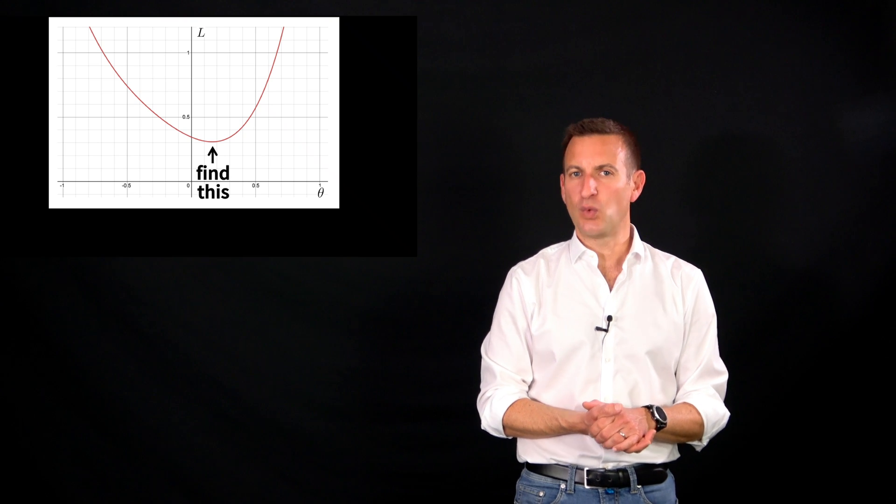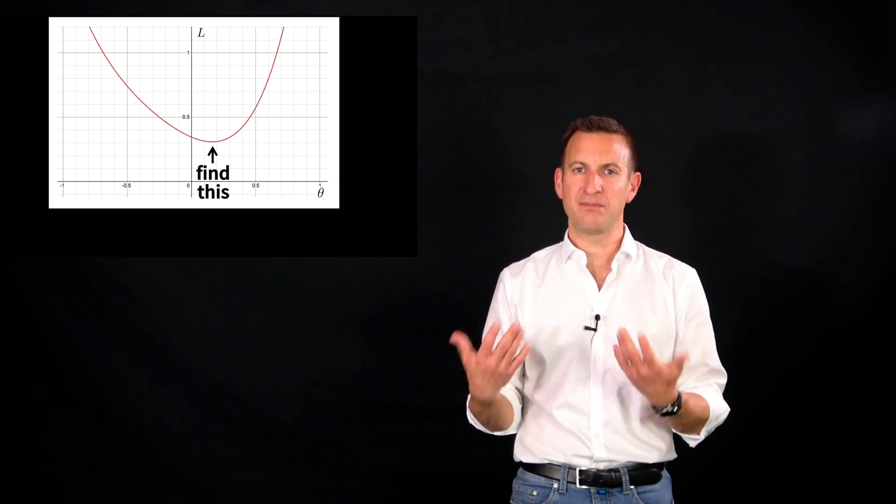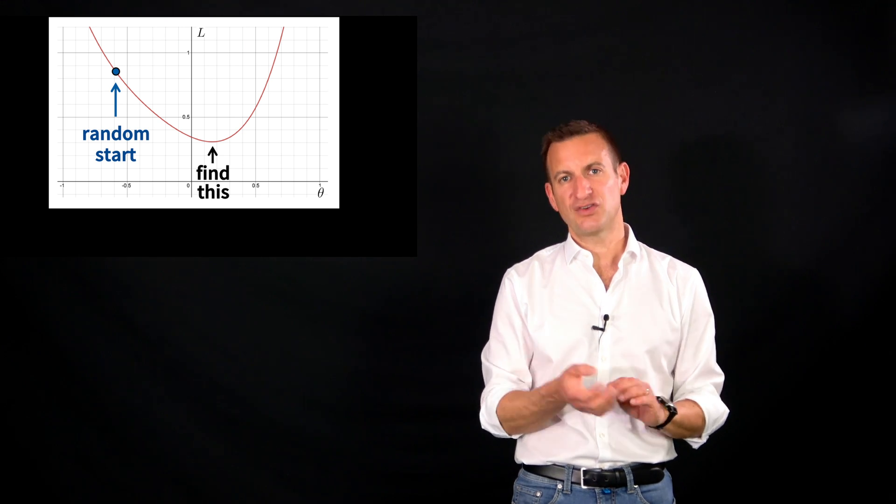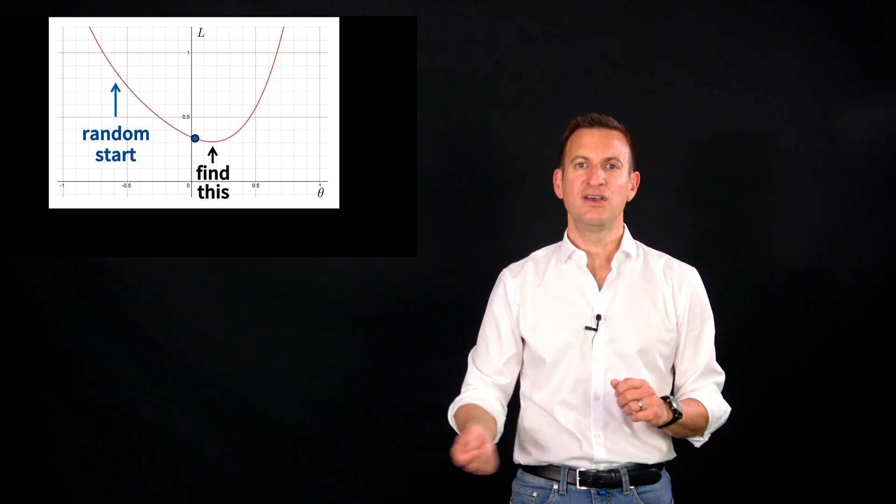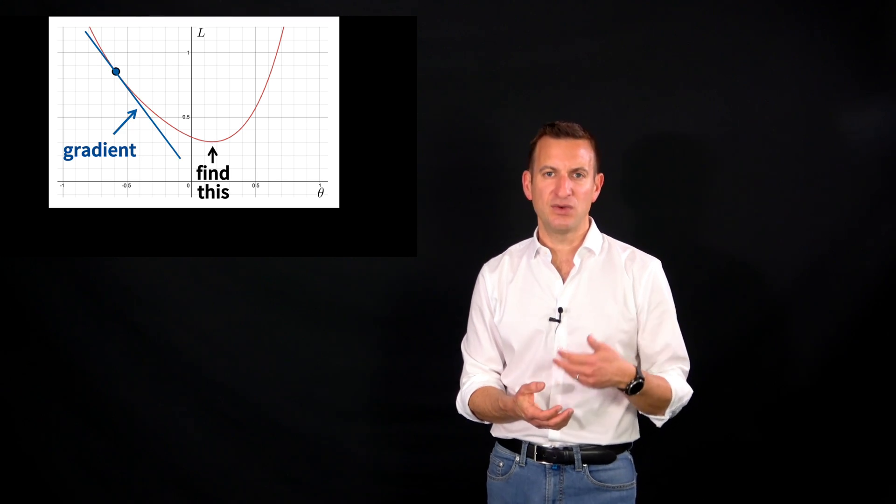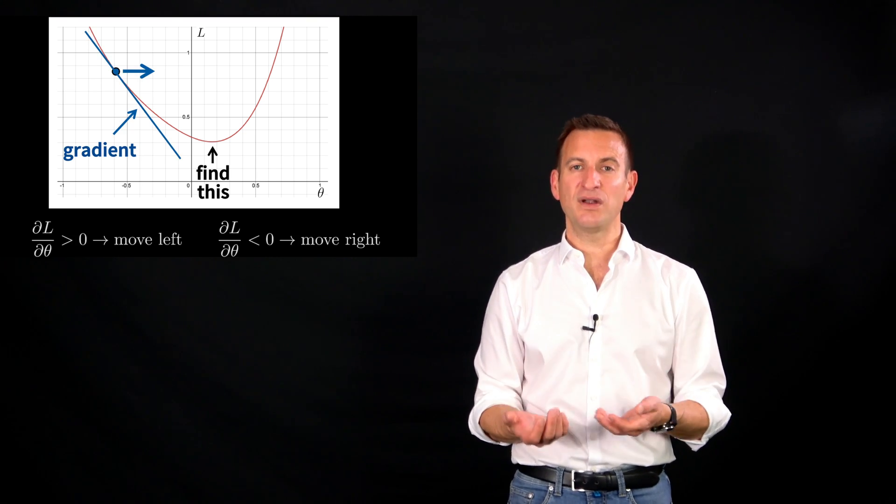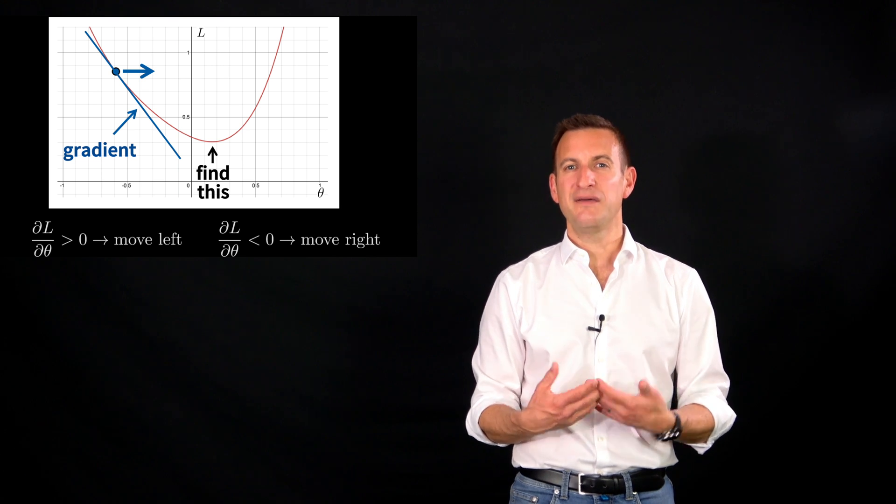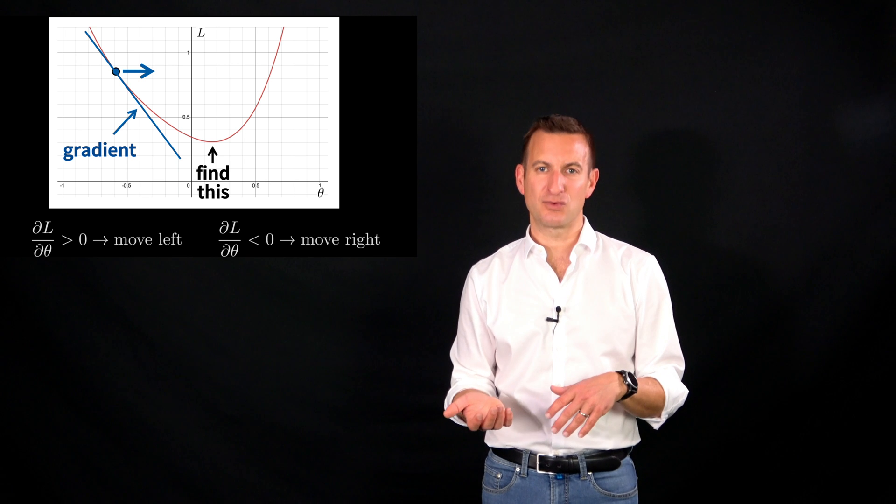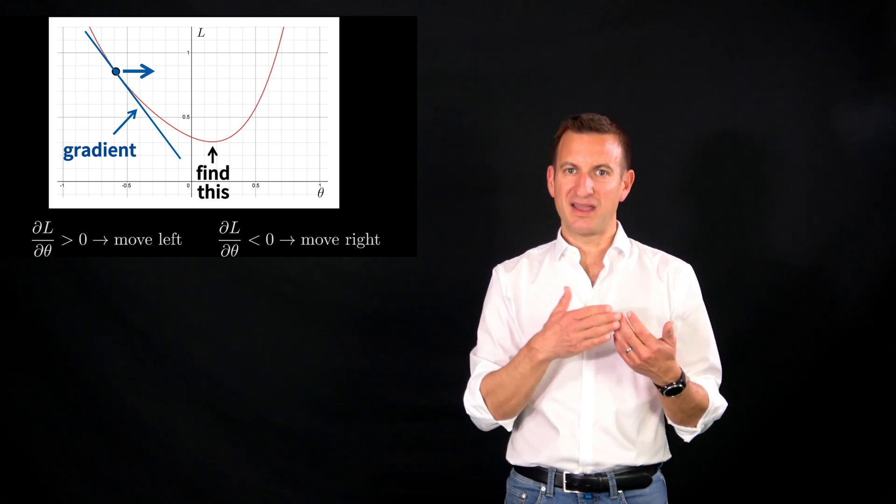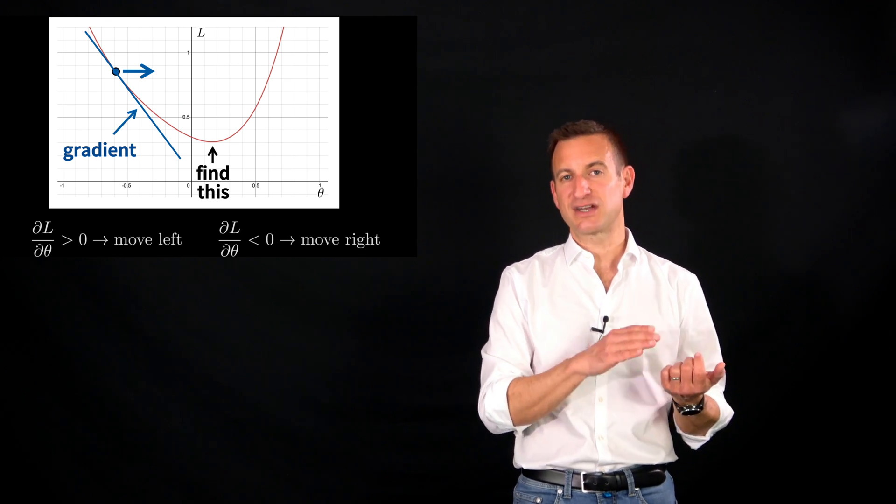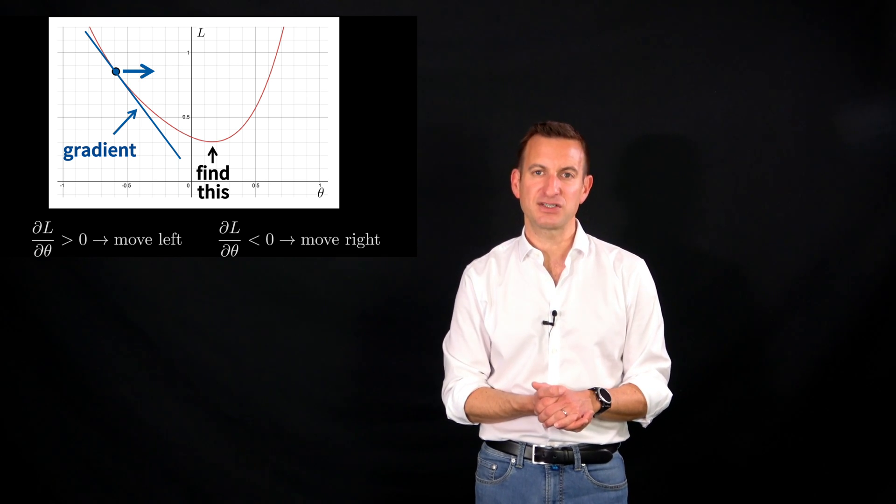So for example, we have this 1D function over here. We have a current parameter vector, and the question is how should I change this parameter vector so that in the end I find the minimum of the function f. And what I can do is I can compute the gradient, and in 1D it's sufficient to just look if the gradient is positive or negative, because this tells me if I should move left or right. And so just by looking in which direction to go, in the positive x direction or negative x direction, I can actually minimize this function.